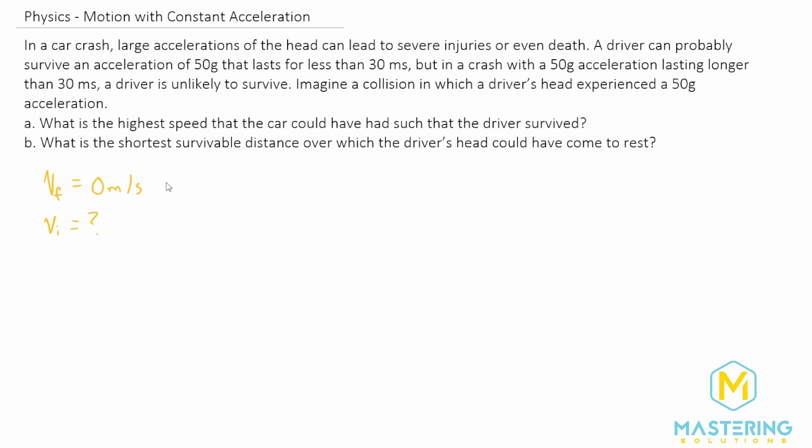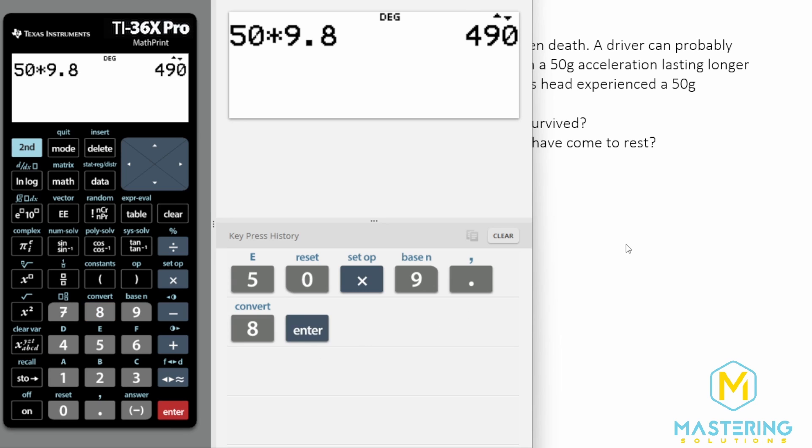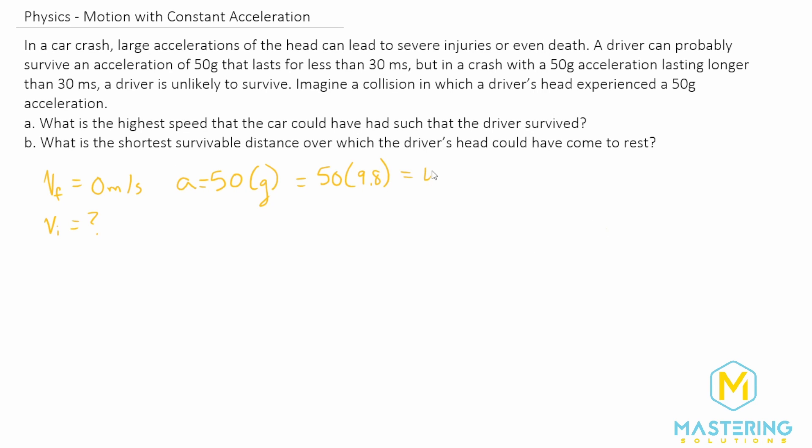Now we know that the acceleration is 50 Gs. So what does that mean? We have 50 times G, which is equal to 50 times 9.8. So if we plug that in, we get 50 times 9.8 meters per second squared, which gives us 490. So that is 490 meters per second squared.